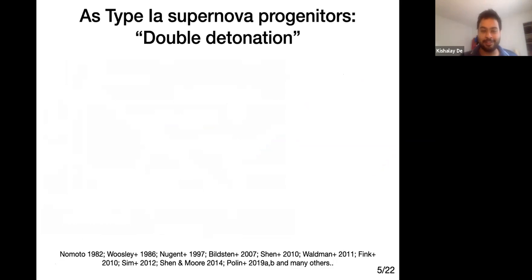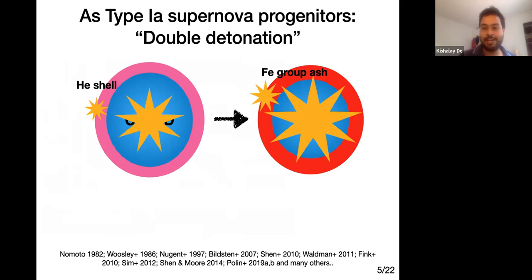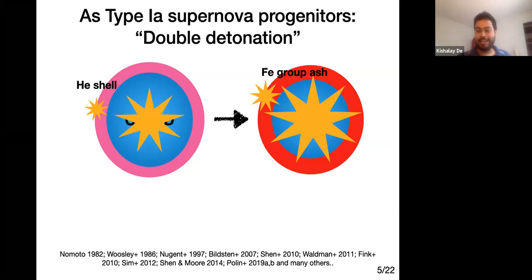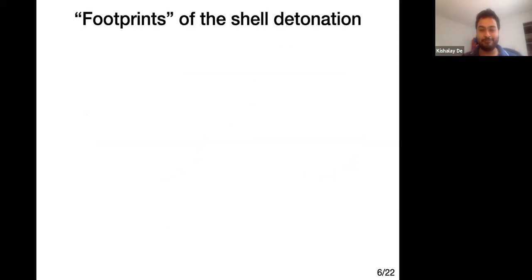This helium shell explosion scenario — the double detonation mechanism — has been proposed since the 1980s as a producer of type Ia supernovae. The idea is that a CO white dwarf with a helium shell detonates the shell, driving an explosion in the underlying core. The observational signature is a supernova with iron group material on the outside from burning of the helium shell. This iron group material in the outer ejecta produces strong line blanketing in the blue part of the spectrum — absorbing all the blue flux — which is remarkably different from normal type Ia supernovae that are very homogeneous at peak.